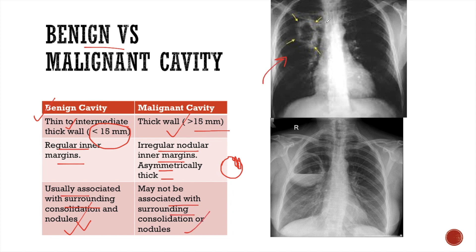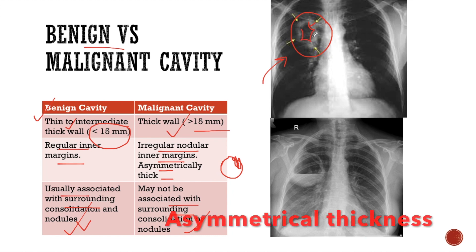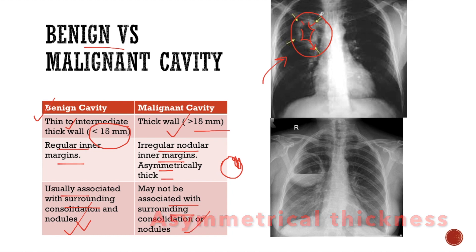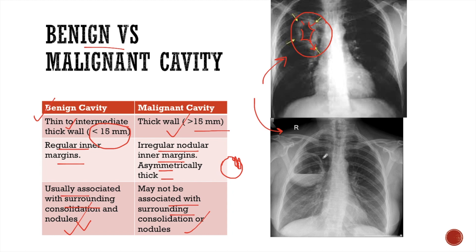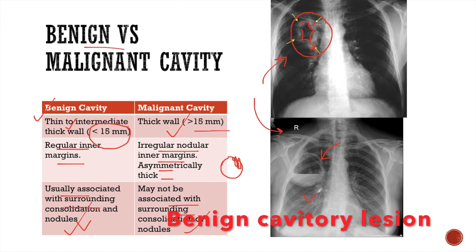In this first X-ray, we can see a lucent area in the right upper and middle zone. This lucent lesion has a thick wall, and the wall is nodular with asymmetrical thickness — it is more thick on the lower aspect and less thick on the upper aspect. So this is a case of a malignant cavity lesion. In the second X-ray, however, the wall of the cavity is thin and regular in appearance, with no nodularity. Hence, this is a benign cavity lesion.